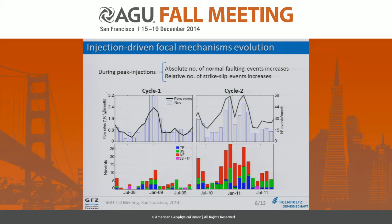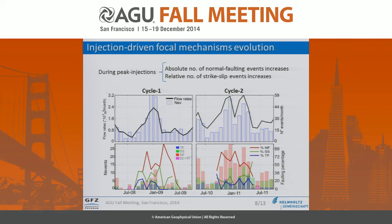We then examined a number of seismological properties with time, showing here the evolution of the focal mechanisms. The gray bars correspond to the total seismicity rate and the black line is the gross amount of fluid injected, while the lower part shows the absolute number of relocated events for each faulting style. At the time of peak injections, the number of normal faulting events increases significantly, but surprisingly the number of strike-slip and thrust-faulting events also increases more than expected. Plotting the percentage of each focal mechanism type, we see a decrease of approximately 20% in normal faulting during peak injections, recovered between strike-slip and thrust-faulting.